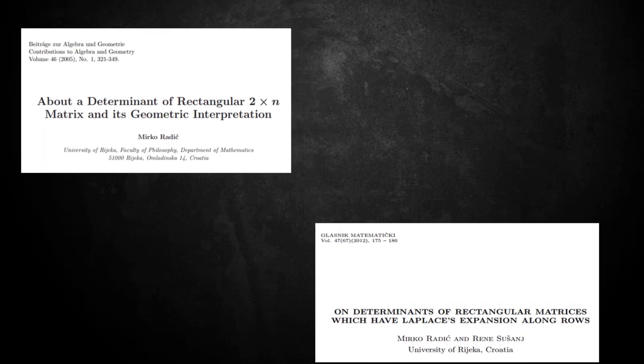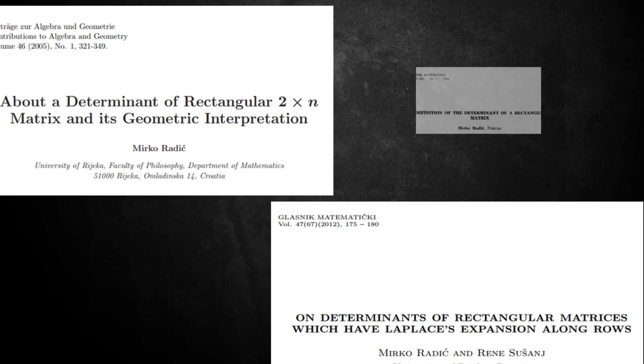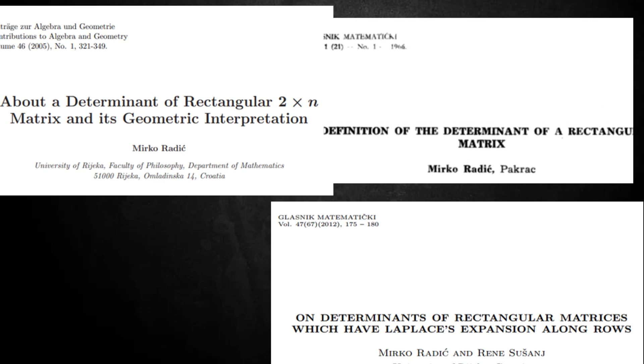Croatian mathematician Mirko-Rodić published his theory about rectangular determinants in different research papers from 1966 up to 2012.